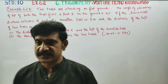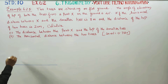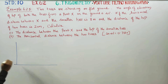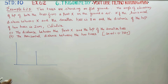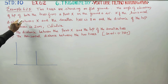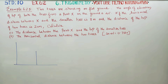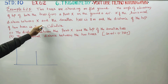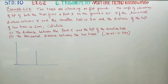Two trees are standing on flat ground. The angle of elevation of the top of both trees from point X on the ground is 40 degrees. The horizontal distance between X and the smaller tree is 8 meters, and the distance between the tops of the two trees is 20 meters. Calculate.